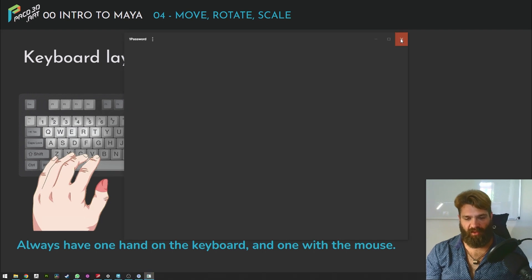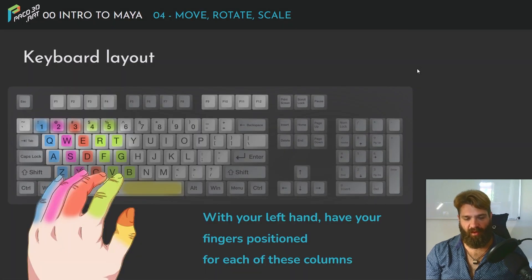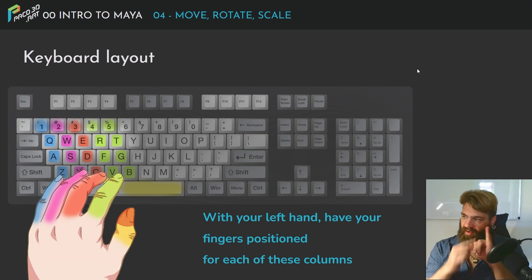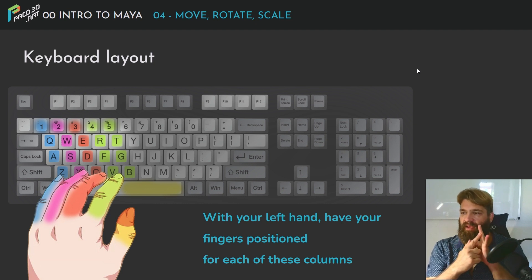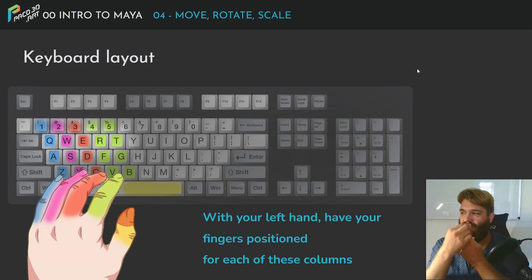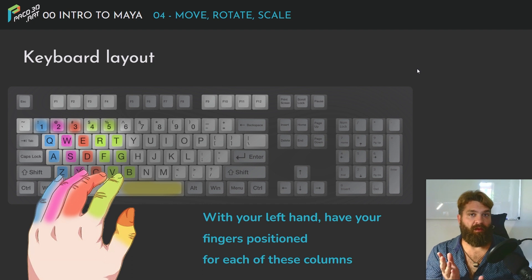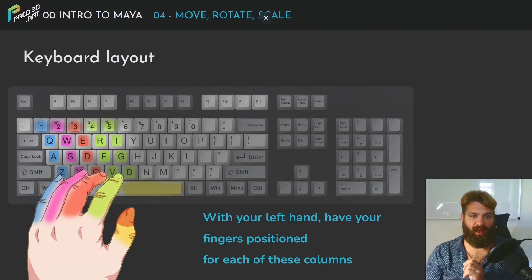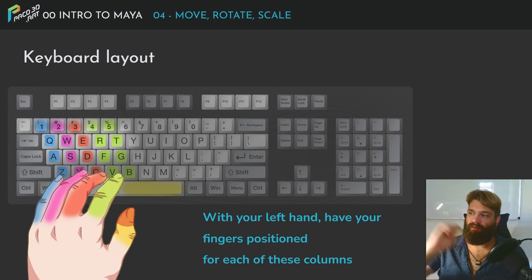If you look at the fingers that are painted with colors, anything done with the index finger covers 1, Q, A, and Z. With the second finger you have 2, W, S, X. And then the ring finger covers those keys as well. Always think about it this way — whenever you're doing anything with Maya or 3D graphics, it's very shortcut-heavy, so keep that hand ready on the keyboard at all times.